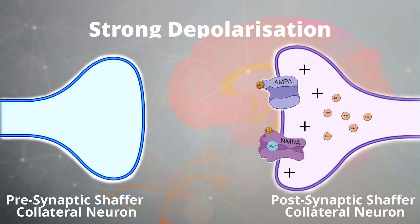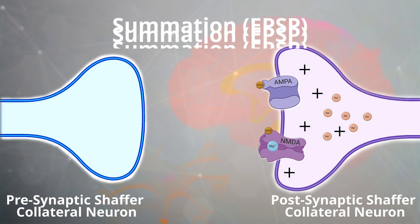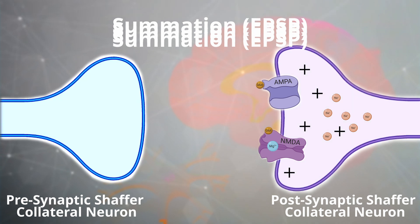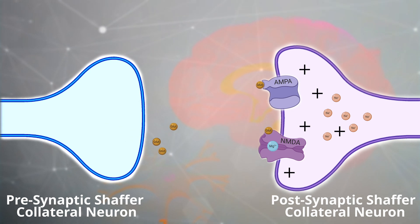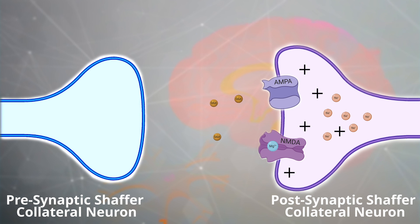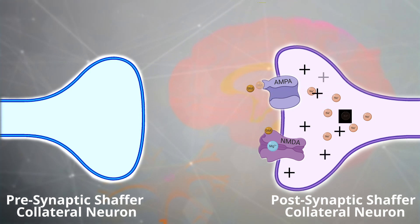Through either a strong depolarization, high frequency action potentials, or the summation of multiple weak action potentials — EPSP buildup — a greater amount of glutamate can be released from the pre-Schaffer collateral neurons. This will allow AMPA receptors to stay open for longer, enabling more sodium ions to enter over time, which causes a stronger depolarization of the post-synaptic neurons.